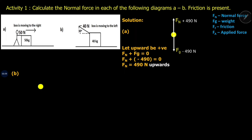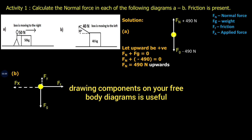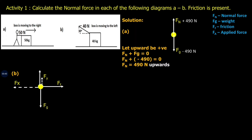In diagram B we have a 40 Newton force acting in 2D, so we need to show the components of that 40 Newton force in the horizontal direction and in the vertical direction. The horizontal component is Fx and the vertical component is Fy.